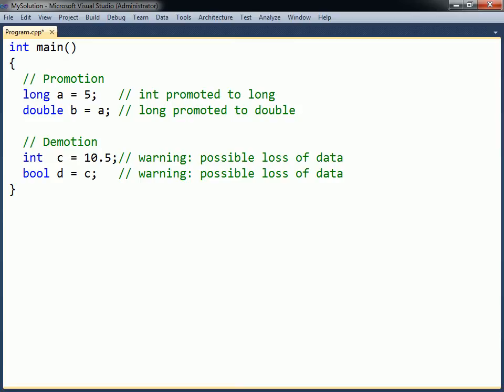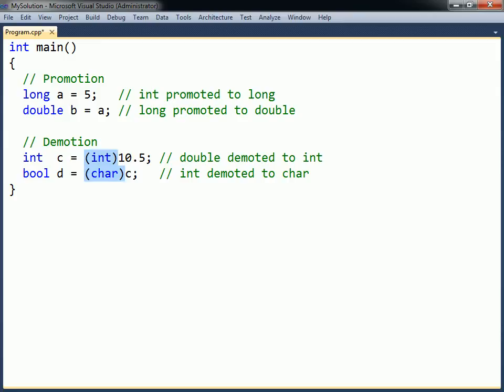If the potential information loss is intentional, the warning can be suppressed by using an explicit cast. The first explicit cast is the one inherited from C, commonly called the C-style cast. The desired data type is simply placed in parentheses to the left of the expression that needs to be converted.